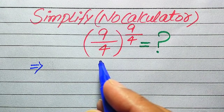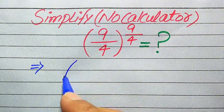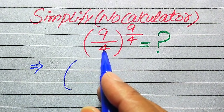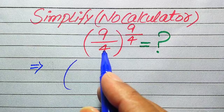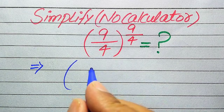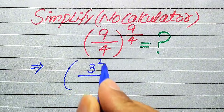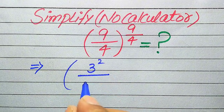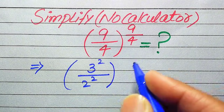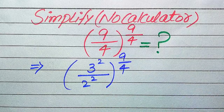Moving towards the solution, the very first thing we are going to do is write both terms into prime factor form. The prime factors of 9 are 3 squared, and the prime factors of 4 are 2 squared, and the whole power is 9 divided by 4.